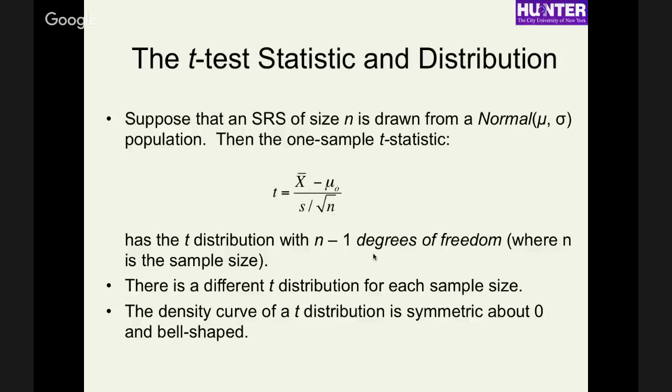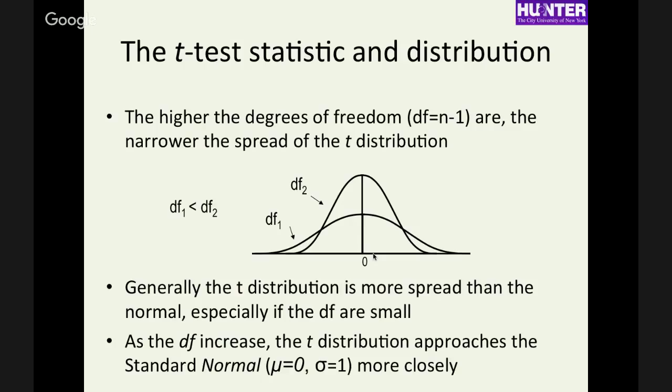But the important thing is that this t-distribution depends on sample size. So unlike the standard normal distribution, where there's just one of them, there's a different distribution for different sample sizes. That distribution is still symmetric and centered around 0 and bell-shaped. So it looks similar. But the difference is that the tails are a little bit wider in the t-distribution. And the fewer samples and, as a result, fewer degrees of freedom, the wider that distribution is. And as sample size gets very large, it becomes more and more similar to the standard normal distribution with standard deviation 1.